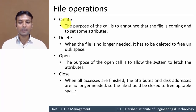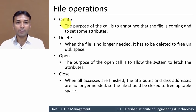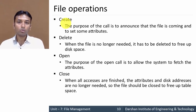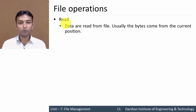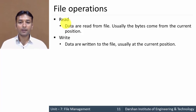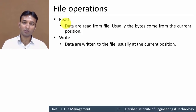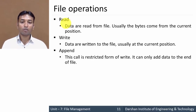The fourth operation is close: when all accesses are finished, the attributes and disk address are no longer needed, so the file should be closed to free up table space. The fifth is read: data are read from the file, usually from the current position. The sixth is write: data are written to the file, usually at the current position.